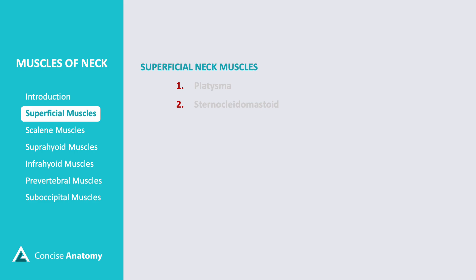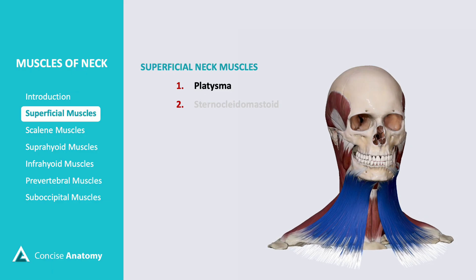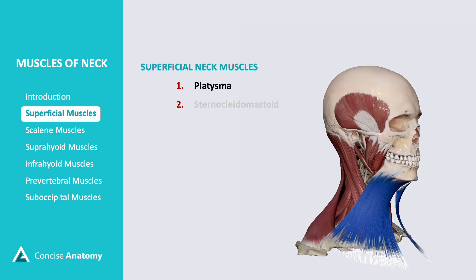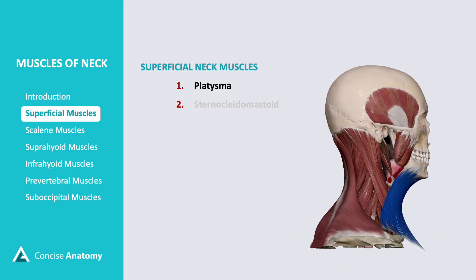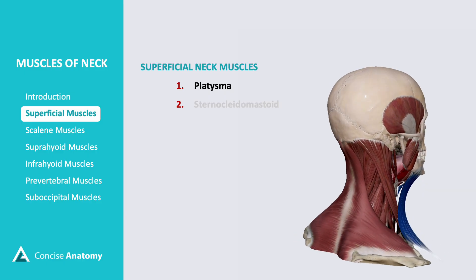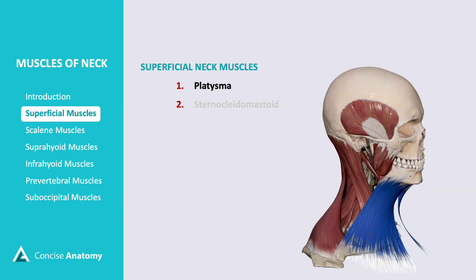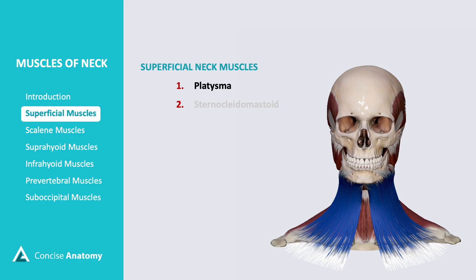The superficial neck muscles play a key role in facial expressions and head movements. Platysma is a thin, sheet-like muscle that runs from the lower jaw to the upper chest. It helps in facial expressions by tensing the skin of the neck and assists in depressing the mandible.